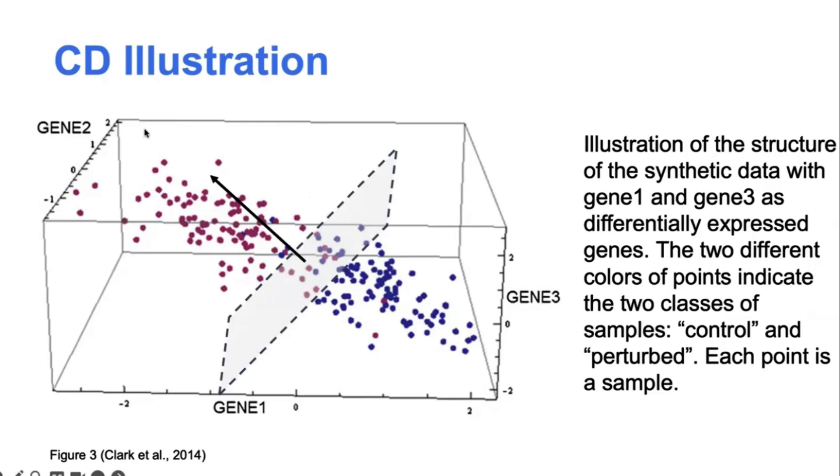And if we were to go in and look at the components of this vector, we would see that genes one and three would have relatively large values and that the component value for gene two should be very close to zero. So that's sort of how this differential expression gets captured inside the characteristic direction vector.